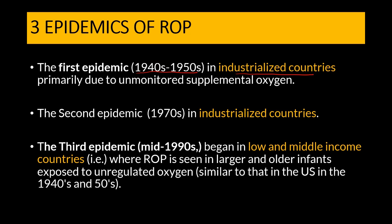Due to recent advances in neonatal care, a new problem appeared in 1970: more and more babies were being born earlier, and more premature babies were surviving at earlier gestational ages with lower birth weights. Because of these two risk factors — more premature infants and more babies with low birth weight — a second epidemic was seen in the same industrialized countries in 1970.